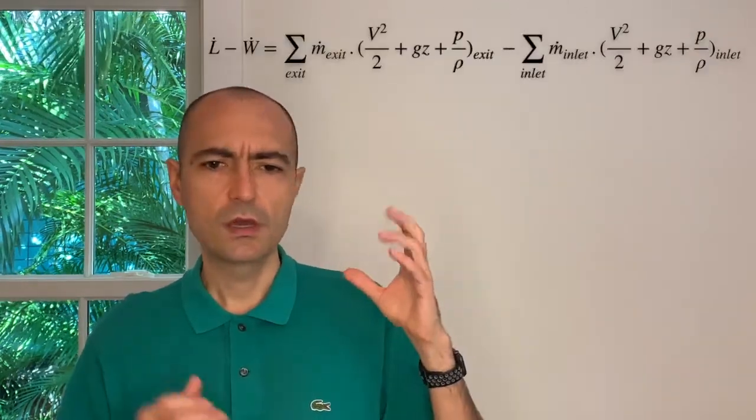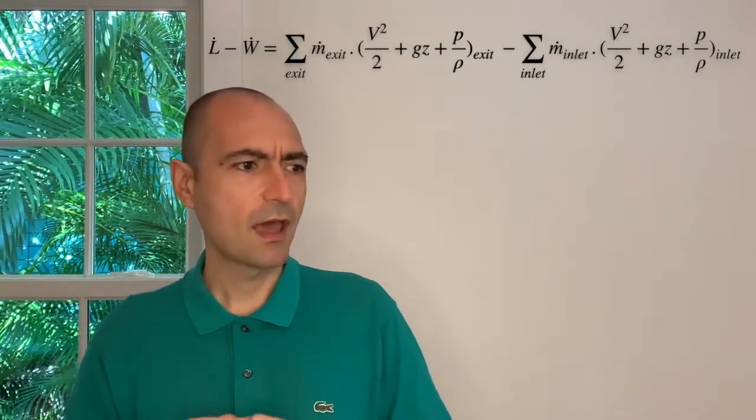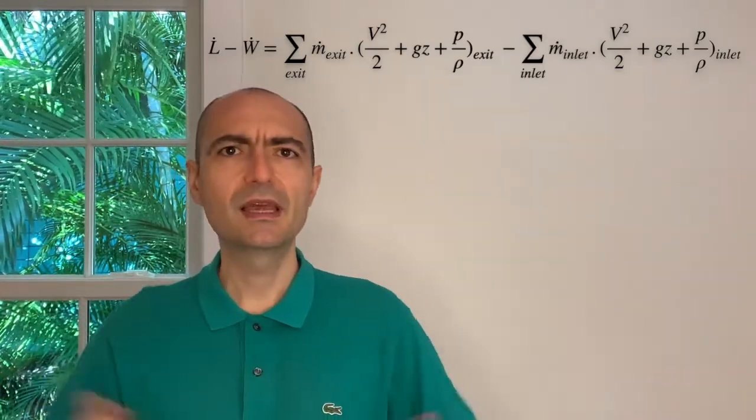And the loss was energy loss per unit mass, so it's joule per kilogram in terms of the units. And then I showed you how to approach marginal cases where I'm going to have, let's say, multiple exits. And I showed you that you need to multiply each of these terms,